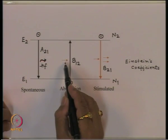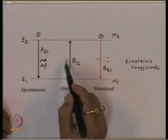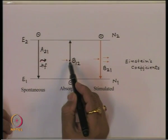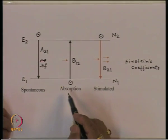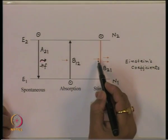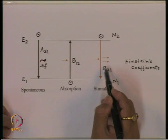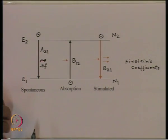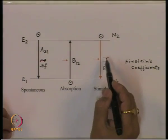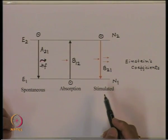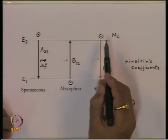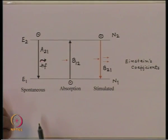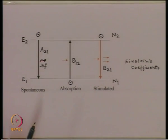That means when the photon is incident, we cannot predict whether this photon will get lost and the electron will make an upward transition, or whether the photon will stimulate this process and cause emission of one more photon. We saw that if the stimulated process has to dominate, we should have more electrons in the upper level. We saw some three energy level systems and four energy level systems.